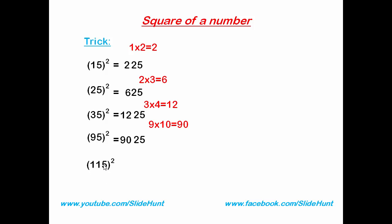Next number is 115. The last digit is 5, so 5 squared is 25. The remaining digits are 11, and the next number of 11 is 12. 11 times 12 is 132. So the square of 115 is 13225. This is it — hope you understand. If you have any doubt, please comment on the video. I'll be back with another tutorial. Until then, see you, goodbye.